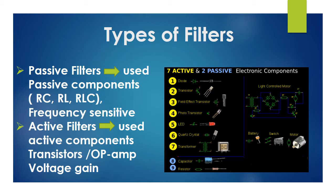Active components include transistors, op-amps, and diodes. Filters designed using active components are called active filters. The key difference is that passive filters are frequency sensitive, while active filters provide voltage gain.